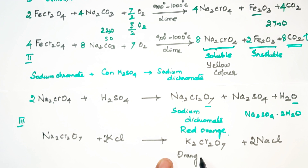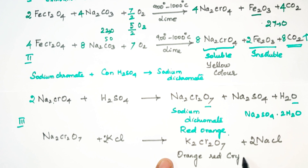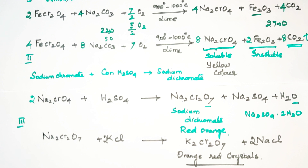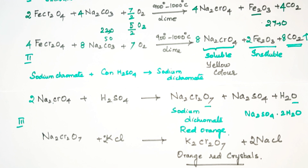So the potassium dichromate orange-red crystals are obtained by crystallization. That is how we are preparing potassium dichromate. Hope you all understand, thank you.